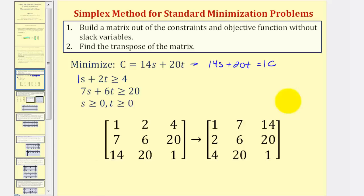Step two: we want to find the transpose of this matrix. So if this is matrix A, this would be the transpose of matrix A. Notice how row one becomes column one, row two becomes column two, and row three becomes column three.